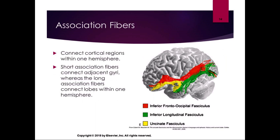Association fibers connect cortical regions within one hemisphere, so they stay all on the right or all on the left. Short association fibers connect adjacent gyri, whereas the long ones connect lobes within one hemisphere. A lot of the areas in our brain — which we'll talk about in the next section — some are dedicated to specific things like sensory or motor, but a very large percentage are considered association areas where they're integrating and processing information. These association fibers are important for that information processing.